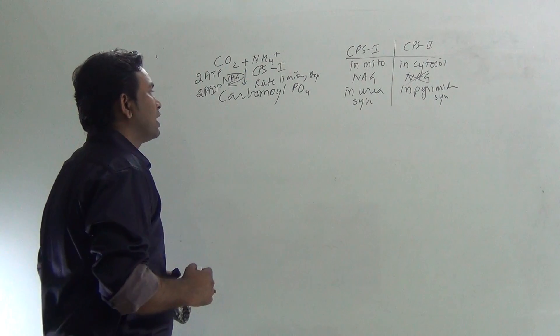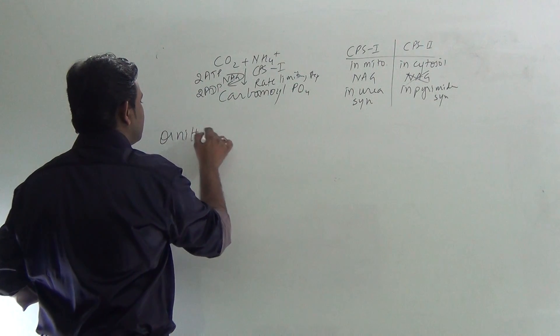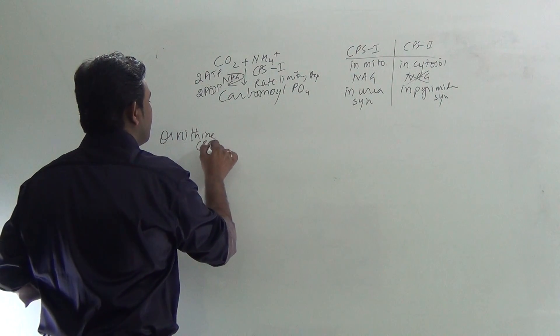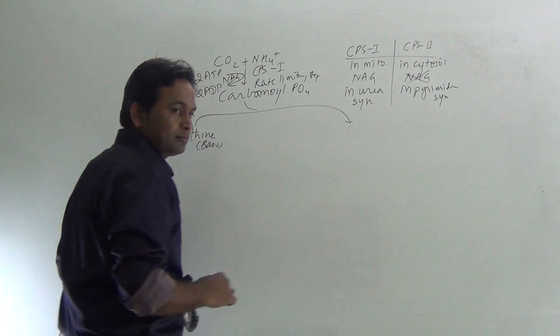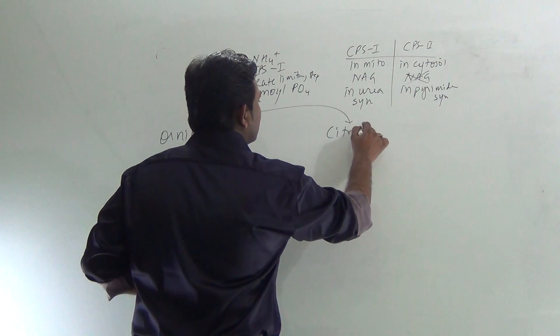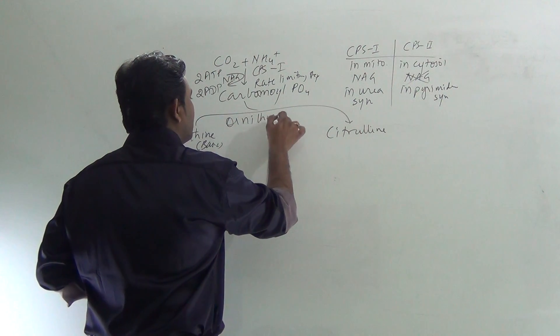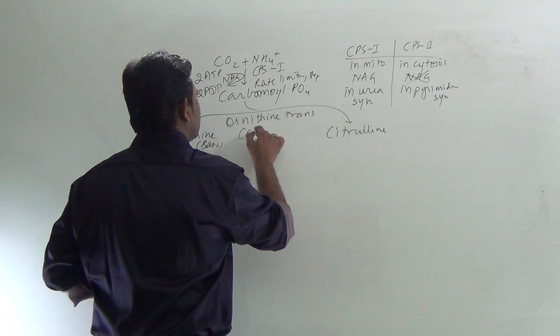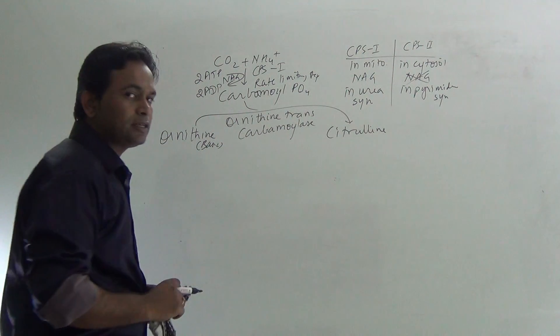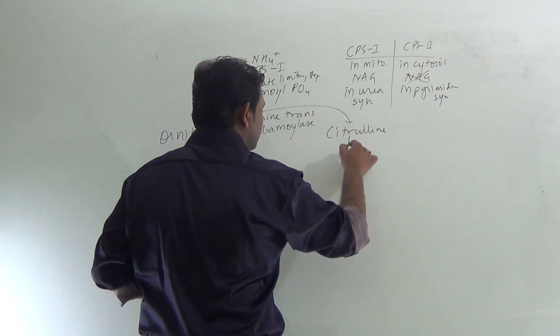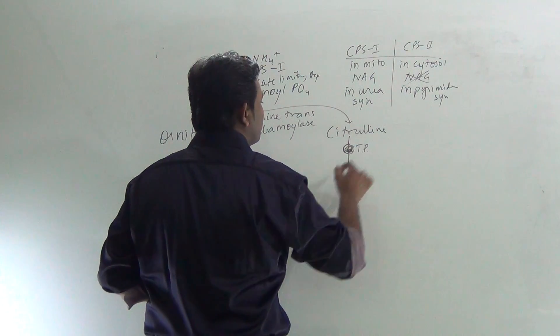As soon as the carbamoyl phosphate is formed, ornithine amino acid, which is a basic amino acid, reacts with carbamoyl phosphate and forms citrulline by the action of ornithine transcarbamoylase. Citrulline is formed. This citrulline crosses the mitochondria with the help of transporter proteins.